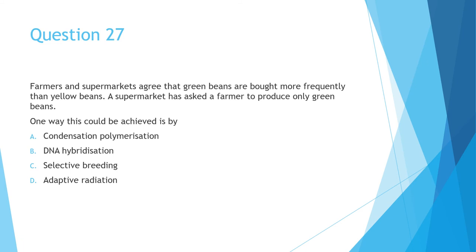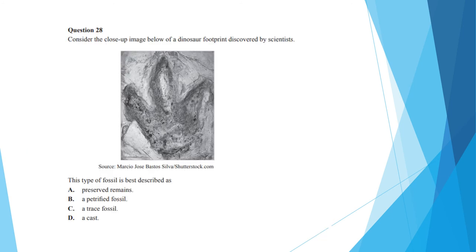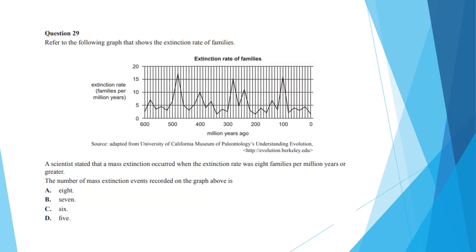Question 27 asks, if a farmer has been asked to produce only green beans instead of both green and yellow beans, how could this be achieved? And it's a straight knowledge recall question and the answer is C, selective breeding. Question 28 shows a close up picture of a dinosaur footprint discovered by scientists. The question asks, what is this type of fossil? And another knowledge recall is trace fossils. Question 29 shows a graph regarding the extinction rate over time. Scientists state that a mass extinction occurs when the rate is eight or more families per million years. And the question asks you how many mass extinction events are recorded in the graph above. Essentially, all you need to do is just draw a line roughly where number eight is, and then count the number of spikes above it. And in this case, that's five of them.